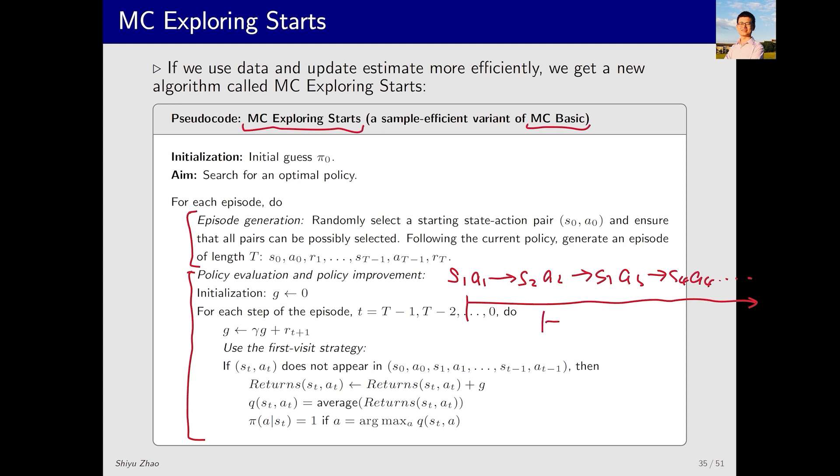Then I would proceed to the next one, S2A2, and sum up all the subsequent rewards again for the return. The same for S3A3 and S4A4. However, as you can see here, this algorithm starts from the end, instead of starting from the beginning. Why? It's actually to enhance computational efficiency.